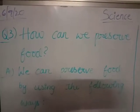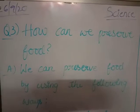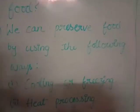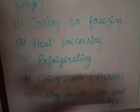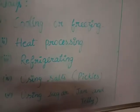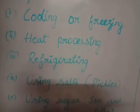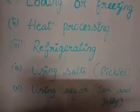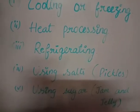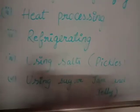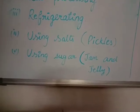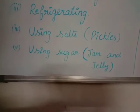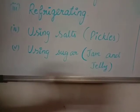The third question: how can we preserve food? We can preserve food by using the following ways. First, cooling or freezing. Second, heat processing. Third, refrigerating — the fruits and vegetables we keep in the refrigerator. Fourth, using salt — that we use in pickles. Fifth, using sugar — that we use in jam and jelly. Sugar also acts as a preserving agent.